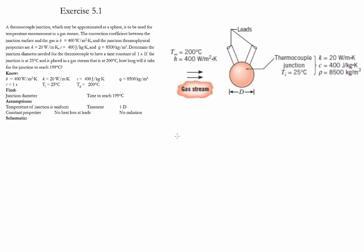We assume that this problem is going to be transient. We also assume that the temperature on the junction is going to be uniform and there is not going to be any heat loss through the leads. We also assume that there is not going to be any radiation and the properties are going to be constant.